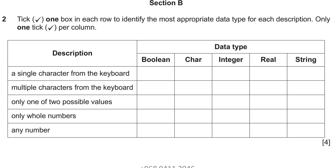Section B: tick one box in each row to identify the most appropriate data type for each description. Only one tick per column. A single character from the keyboard — that is a character where you can enter only a single character, like A, B, Y, and so on. Multiple characters from the keyboard is a string, like 'computing knowledge'. Only one of two possible values is a Boolean value — Boolean data type — that is yes/no, true and false. Only whole numbers is an integer, like 23, 25, and so on. Any number is a real.